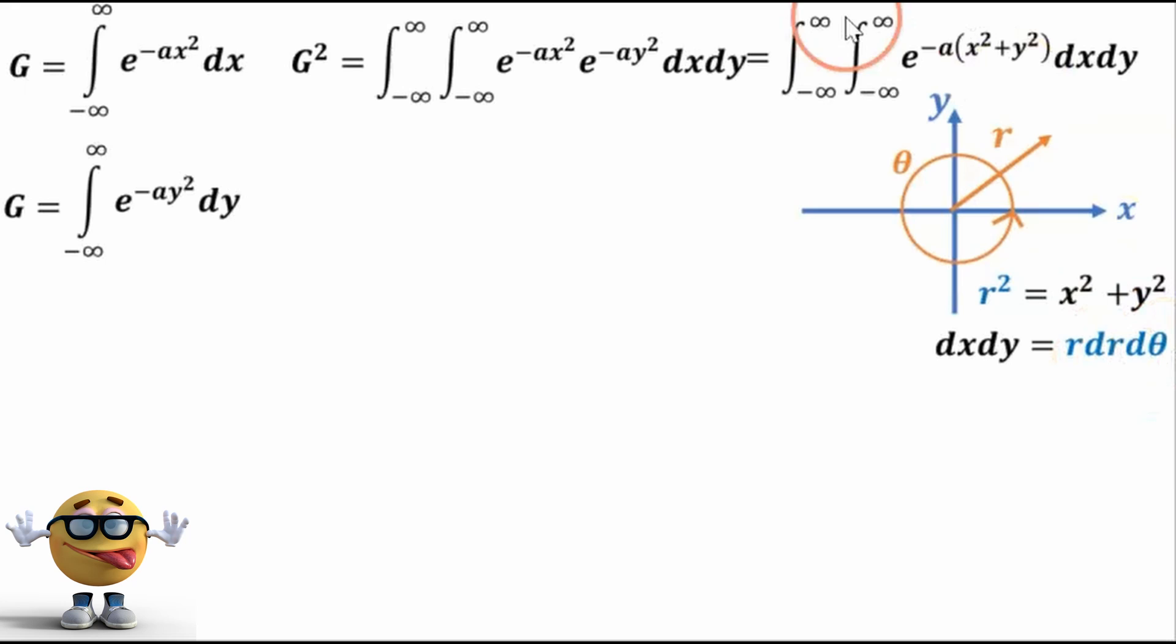Now, as we go from negative infinity to infinity, r can go from 0 to infinity, and theta can go from 0 to 2 pi. So we're extending in all four coordinates right here.